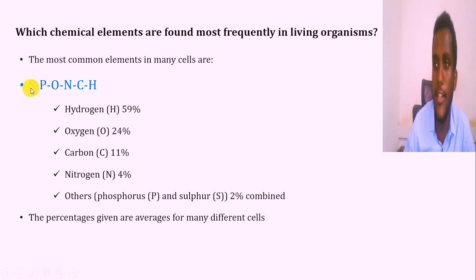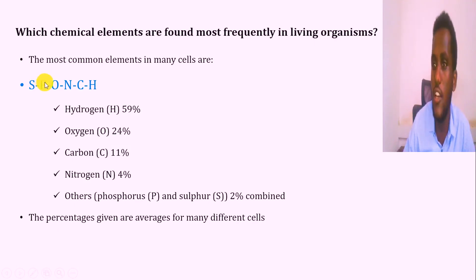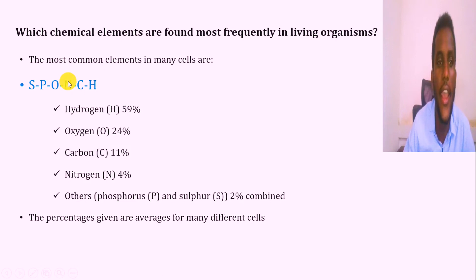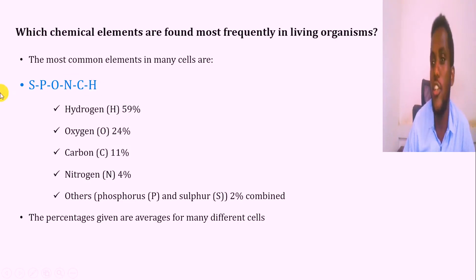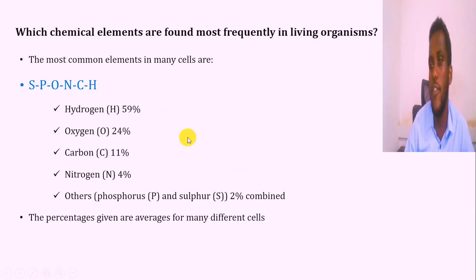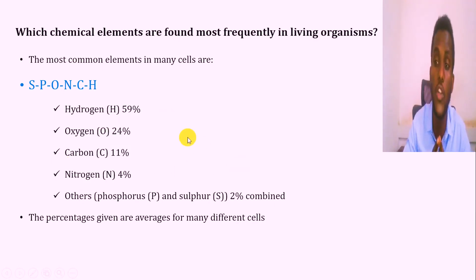In short, the most common elements found in living organisms are: S is sulfur, P is phosphorus, O is oxygen, N is nitrogen, C is carbon, H is hydrogen — forming the mnemonic SPONCH.